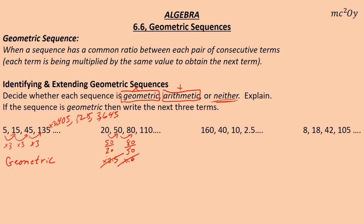Let's try adding. 20 plus what is 50? That's 30. 50 plus what is 80? That's also 30. It looks like we're adding 30 each time, so this would be arithmetic.